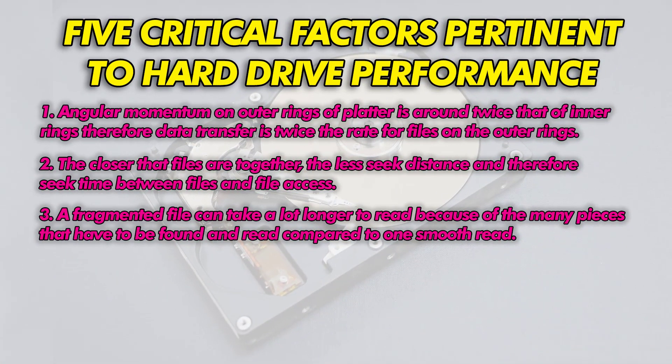File fragmentation is also an important factor. A file that is in many pieces will take a lot longer to read than a file that is contiguous — that is in just one piece. Fragmentation also further reduces hard drive performance since the hard drive heads have to jump all around the drive to read all the pieces of a file. So a fragmented file can actually compound the effects of items 1 and 2 above just while accessing one file.